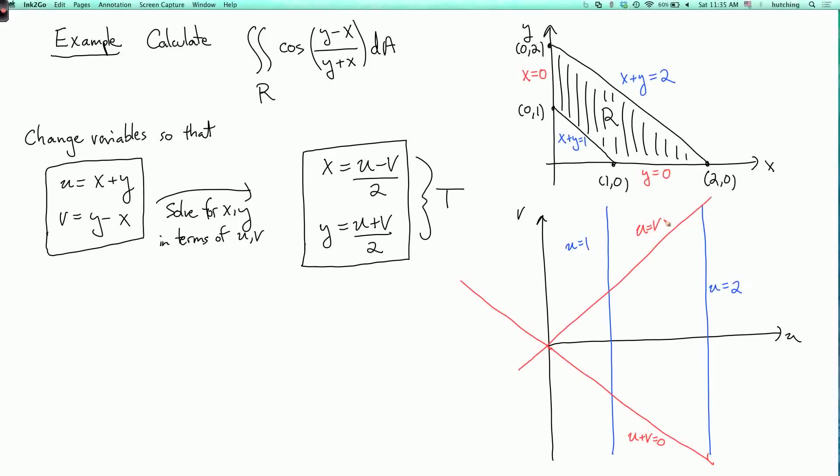So the boundary edges of the region correspond to this segment here, this segment here, and then this segment here, and this segment here. And if your map is a bijection, then the region S is going to be enclosed by the curves corresponding to the boundary. So S is this region in here.